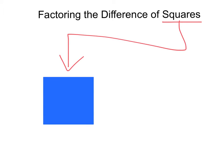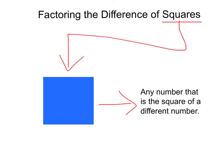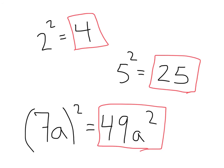Well, yes, but in this case, we mean any number that is the square of a different number. For example, 2 squared is 4. 4 is a square.